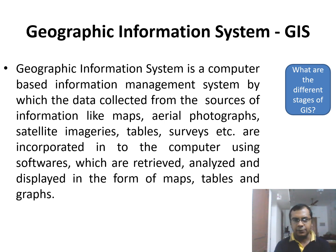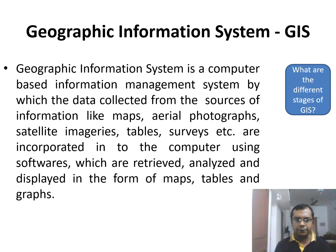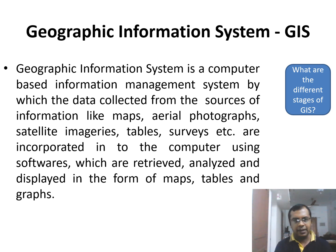What are the different stages of Geographic Information System or GIS? GIS is a computer-based information management system by which the data collected from the sources of information like maps, aerial photographs, satellite imageries, tables, surveys, etc. are incorporated into the computer using softwares which are retrieved, analyzed and displayed in the form of maps, tables and graphs. It's called GIS.